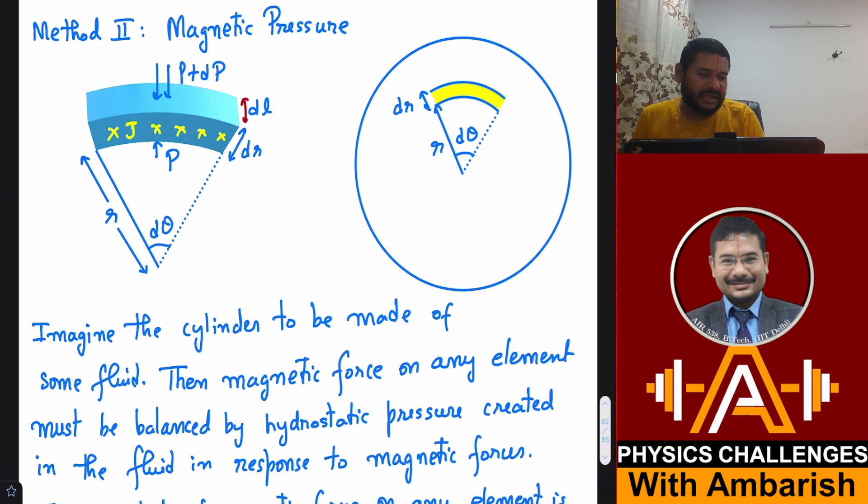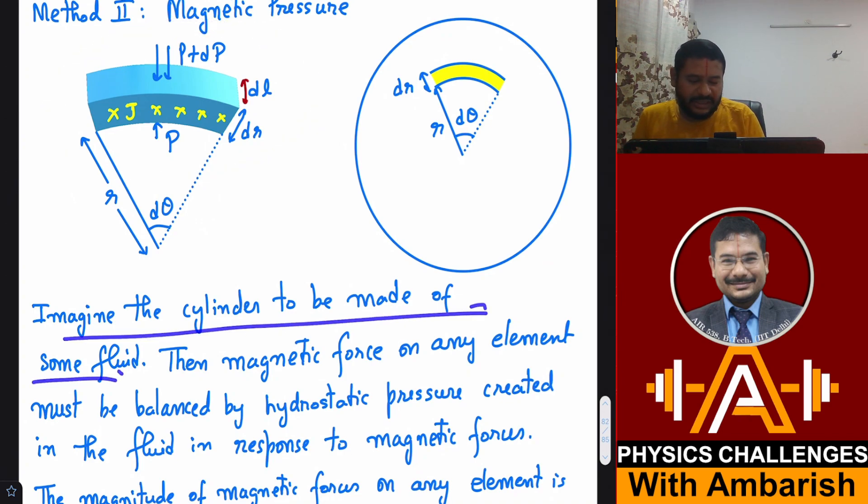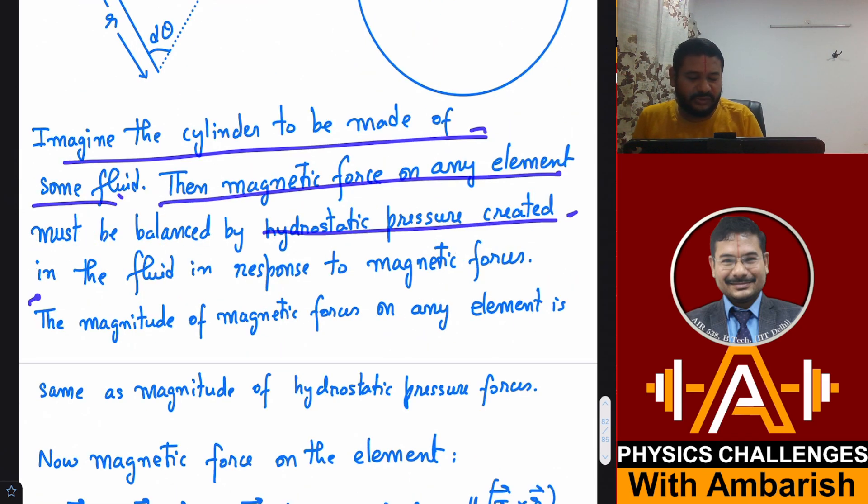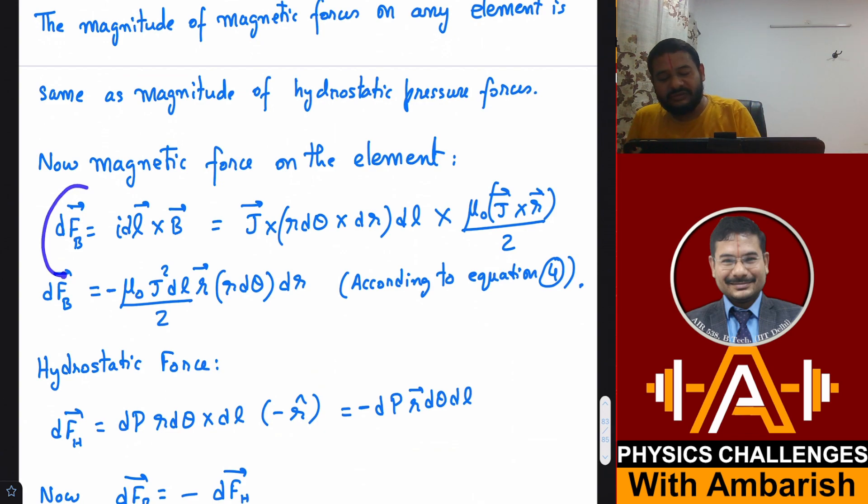Consider an element at distance r from center with thickness dr, inward dimension dl, and d theta. Imagine the cylinder made of fluid. Magnetic force on any element must be balanced by hydrostatic pressure created in response. The magnitude of magnetic forces equals hydrostatic pressure forces because of equilibrium. Magnetic force on each element is ideal cross B. Using mu naught J cross R by 2, you get the magnetic force expression.